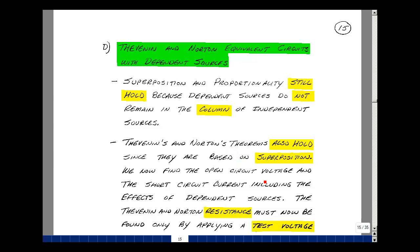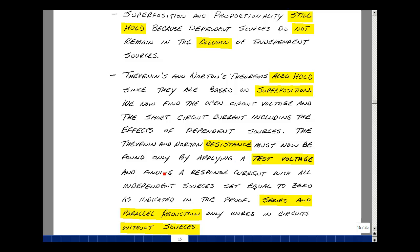You're going to have to find the open circuit voltage or the short circuit current, including the effects of the dependent sources. Thevenin and Norton resistance will have to be found by applying a test voltage and finding the response current, with all the independent sources set equal to zero, as we've indicated in the proof.